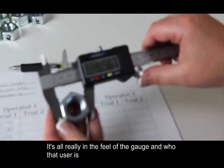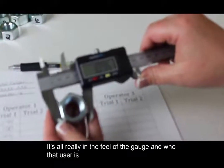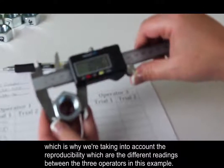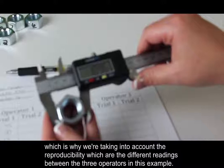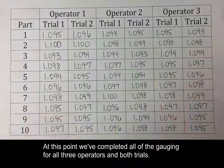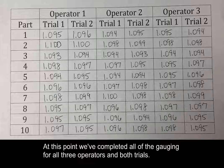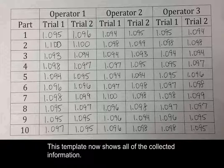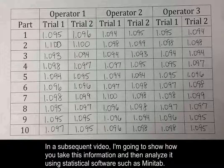It's all really in the feel of the gauge and who that user is, which is why we're taking into account the reproducibility, which are the different readings between the three operators in this example. At this point, we've completed all of the gauging for all three operators and both trials. And so this template now shows all of the collected information. In a subsequent video, I'm going to show how you take this information and then analyze it using statistical software such as Minitab.